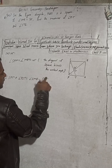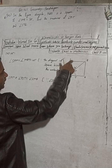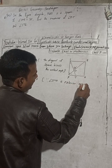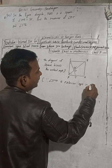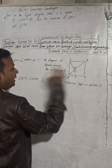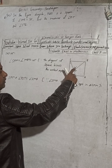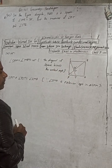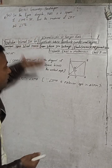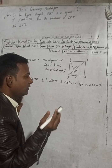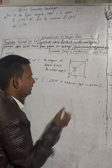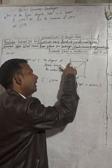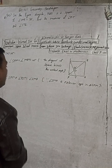The reason is that angle SMR is the exterior angle of triangle SPM. By the exterior angle theorem, the exterior angle is equal to the sum of the two opposite interior angles in a triangle. So angle SMR equals angle SPM plus angle PST.